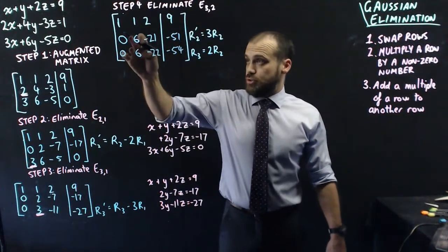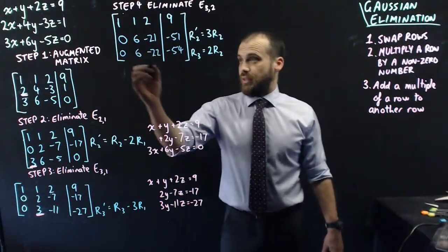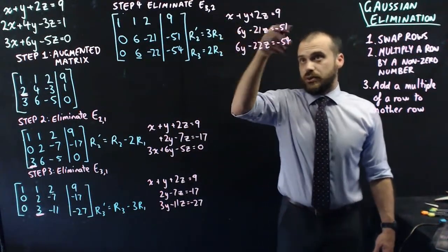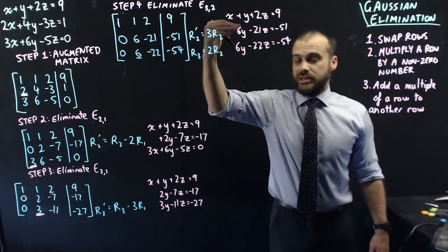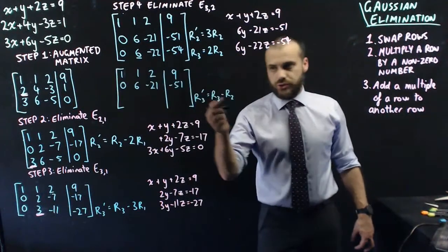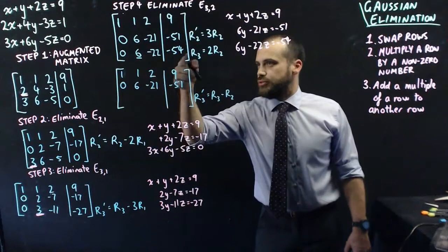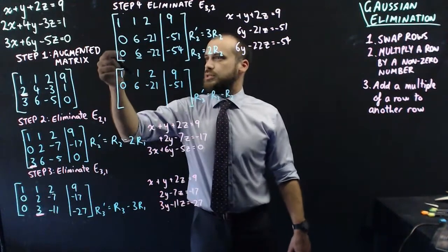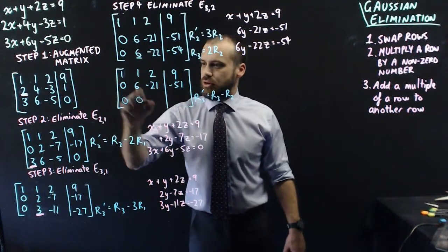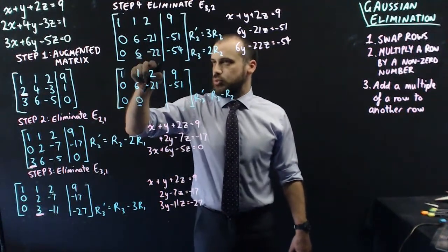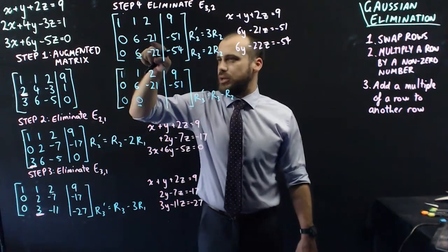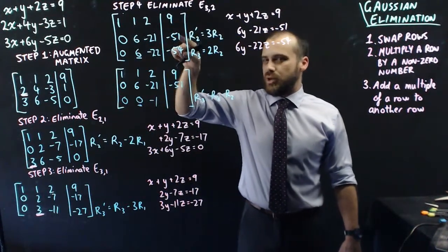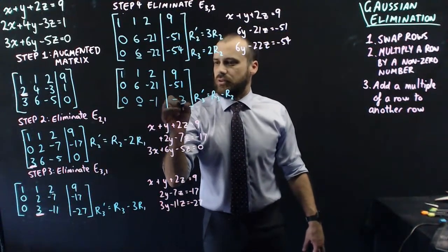Now that we have those two y-coefficients equal, we can just subtract one from the other. The new row three is going to be equal to row three minus row two. Zero minus zero is zero. Six minus six is zero - and that's the thing we were trying to do. Minus twenty-two minus minus twenty-one is negative one. And negative fifty-four minus minus fifty-one - that's going to be negative three.